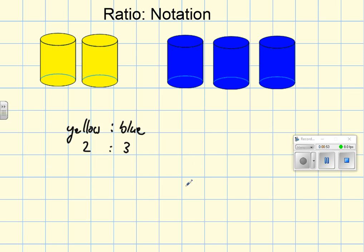And that will get written like this: blue to yellow is 3 to 2.